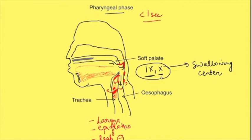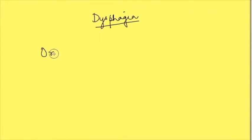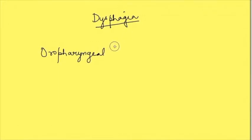Oropharyngeal dysphagia is usually accompanied by other symptoms of paralysis of these nerves. If the problem is in the oral phase, bolus formation is difficult and it can also lead to drooling. There may be a problem with occlusion of the jaw, which will lead to drooling of saliva.